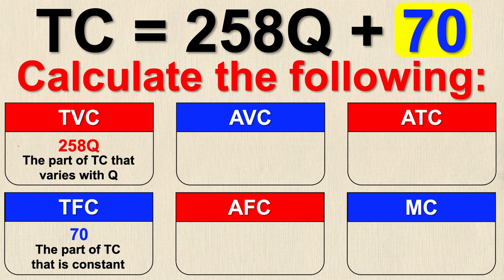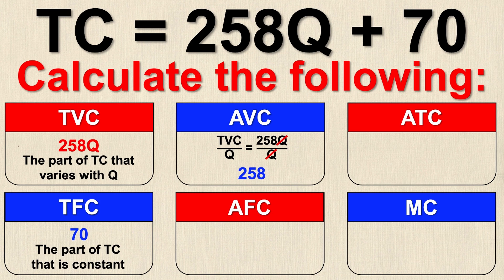Now that we've got the easier things out of the way, let's look at average variable cost. Average variable cost is just the total variable cost divided by Q, the amount of units of output. We calculated total variable cost as 258Q, so we divide that by Q — the two Q's cancel out — and all we're left with is 258. So average variable cost equals 258.